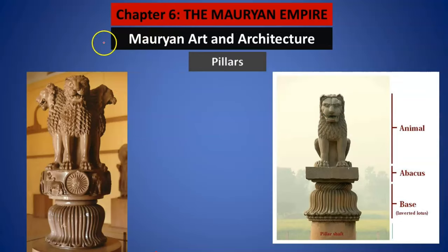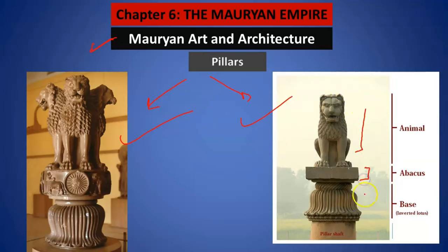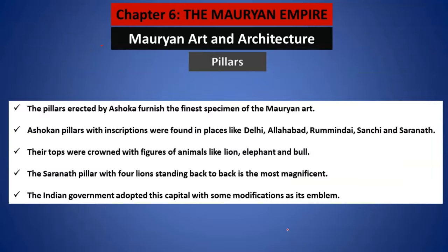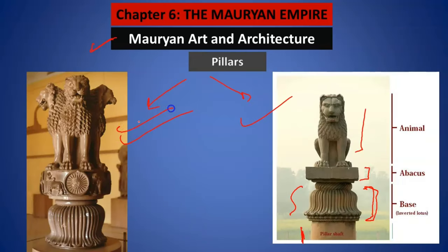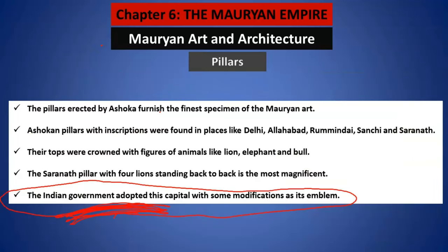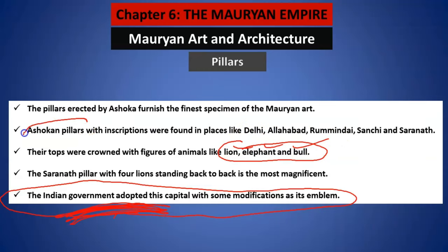Now if I talk about Mauryan art and architecture — you can see how beautifully the pillars were made in that period. This is an example of a pillar — you can see an animal, this is the abacus, and this is a lotus flower in inverted shape, and then this is the pillar. Later on, this emblem — the pillar capital — will become the official emblem of the Indian government. On top of these pillars you will find various animal figures: lion, elephant, bulls. Ashokan pillars with inscriptions are found in various places such as Delhi, Allahabad, Rummindei, Sanchi, and Sarnath. The four lions example is from the Sarnath pillar, which is one of the most magnificent pillars.